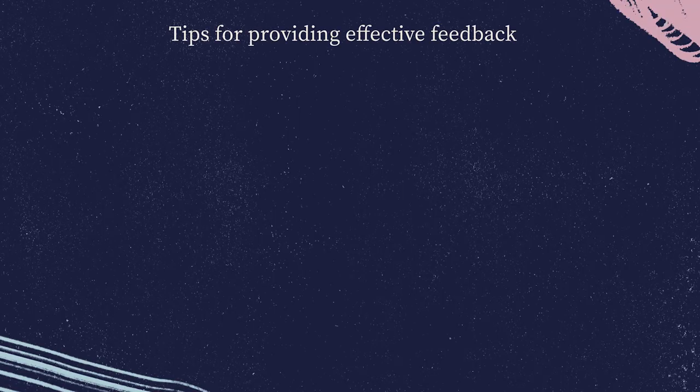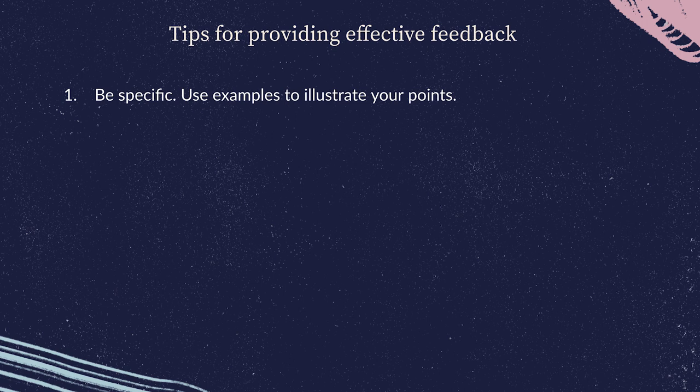Remember, the foundation of effective coaching and mentoring is mutual trust, a safe environment, and confidentiality. Here are some tips to help build a strong foundation. One: be specific about what you're providing feedback on. To the extent possible, use examples to illustrate your point and avoid generalization. Focus on specific teacher actions and how they've affected student learning inside the classroom. Two: provide feedback preferably on the same day of the observation, as delaying feedback can make it less effective and the person may not remember the details.